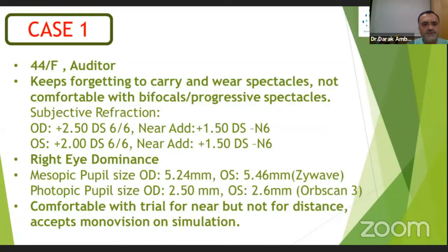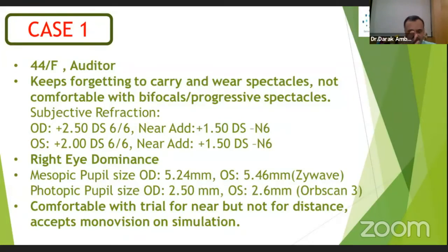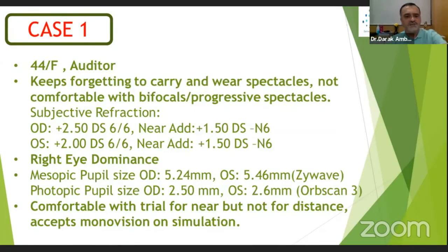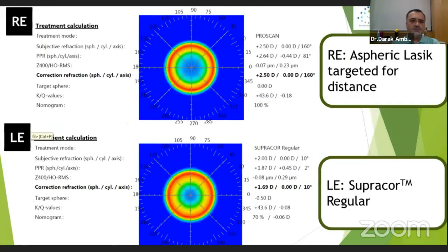I will discuss this case — a 44-year-old auditor who keeps forgetting to carry and wear spectacles. He had hyperopia of plus 2.5 and 2 diopters with right eye dominance. We did SupraCore in both eyes. The mesopic and photopic pupil sizes are mentioned. He was comfortable with the near trial but not for distance, except monovision on simulation. The pre-treatment calculation was done accordingly.